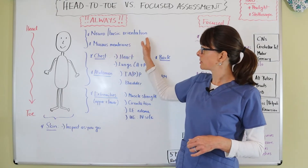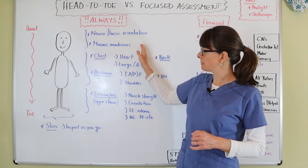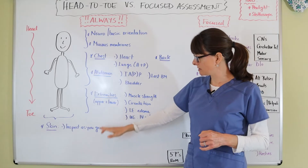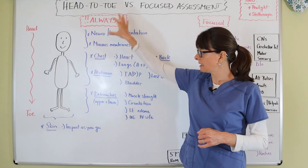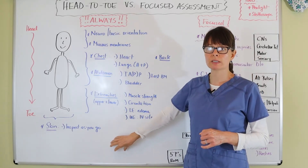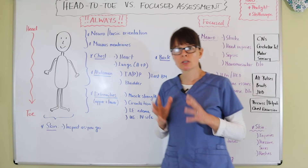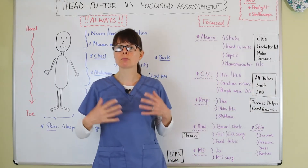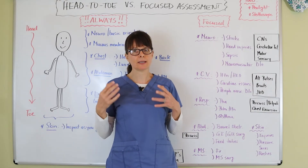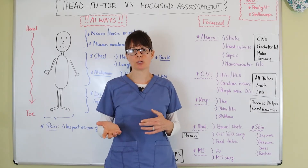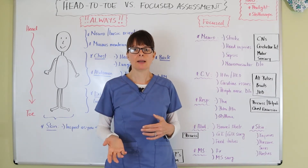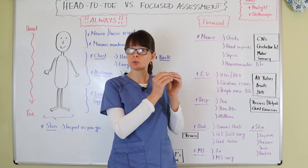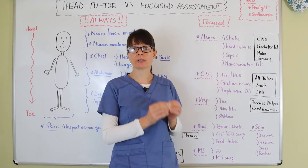As we go, we assess the patient's skin — when we look at their front and their back we can assess their skin as we go, so there's no need to start a separate head-to-toe pass just for skin. So really: basic neuro, mucous membranes, heart, lungs, abdomen, back, extremities, and skin. These are the minimum things we always need to do. Now if the patient is there for a particular focused problem — which most of them will be, whether in the inpatient or outpatient setting — then we're going to focus in more on the problem area.